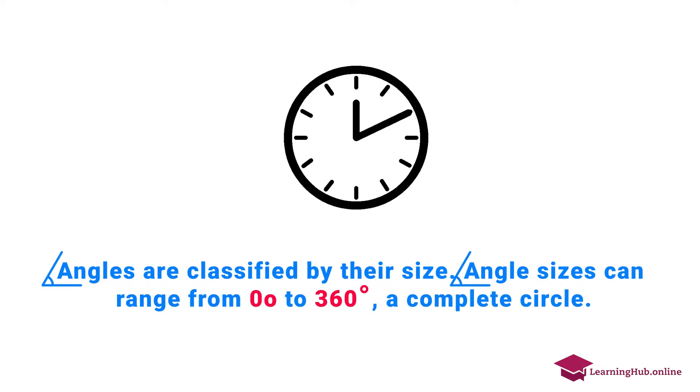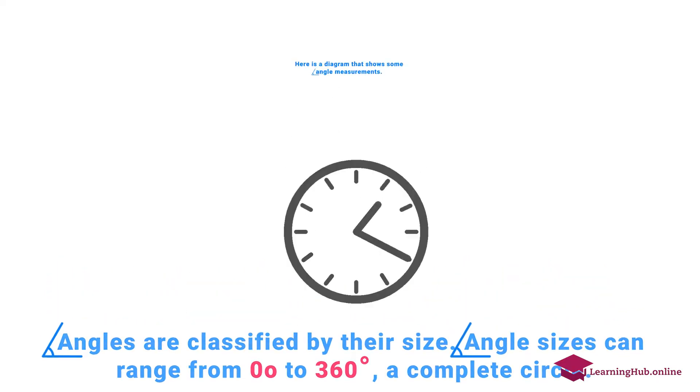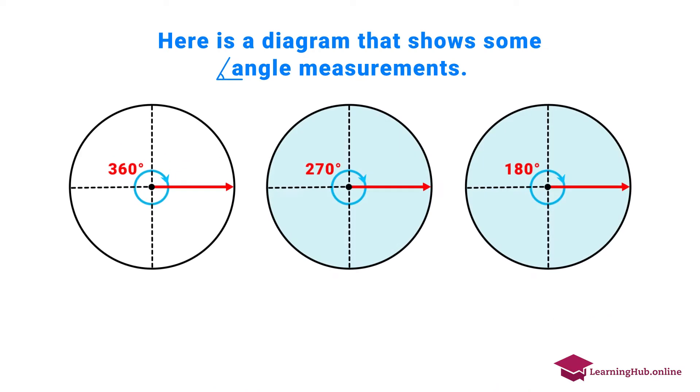Angles are classified by their size. Angle sizes can range from 0 degrees to 360 degrees, a complete circle. Here is a diagram that shows some angle measurements.